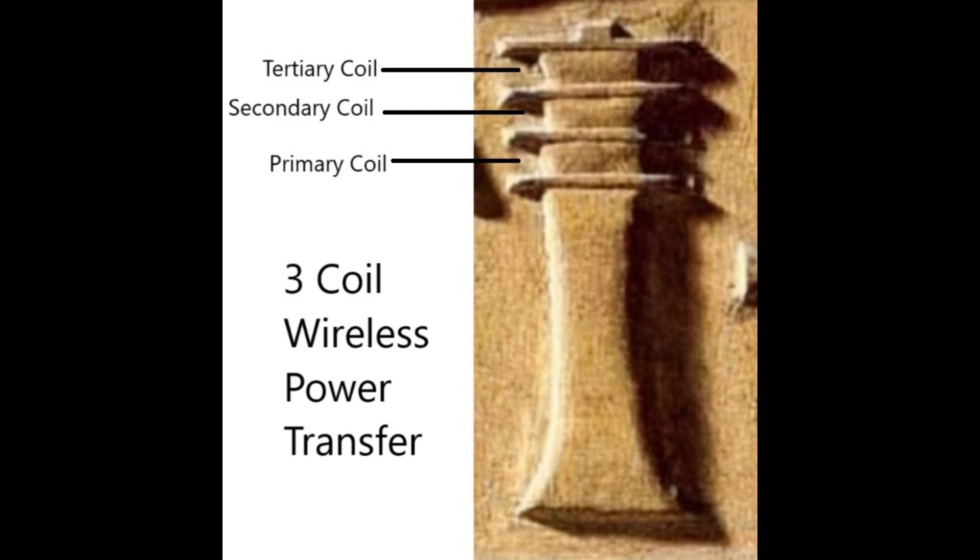Reduced energy losses: by optimizing the transfer of energy through resonant frequencies, the system minimizes energy losses during the transfer process. Range: extended distance in the secondary coil enhances the magnetic field, allowing effective power transfer over greater distances than a single coil system can achieve.